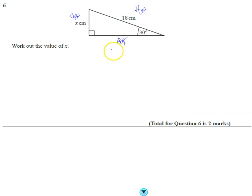Now let's work it out. I have O and H, so it's going to be SOH from SOH CAH TOA. The sine of 30 degrees is equal to opposite x divided by 18.